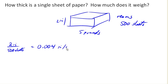Likewise, if we've got 5 pounds for those 500 sheets, we can divide that out and get 0.01 pounds per sheet.